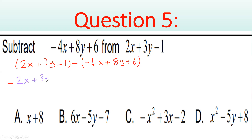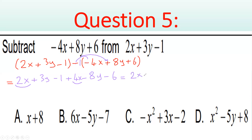Now open the brackets. The minus sign changes all signs inside. So: 2x + 3y − 1, then minus times −4x gives +4x, minus times +8y gives −8y, and minus times +6 gives −6. Think of it as multiplying by −1: (−1)(−4) = +4, (−1)(+8) = −8, and (−1)(+6) = −6. That completes step one — distributing the negative sign.